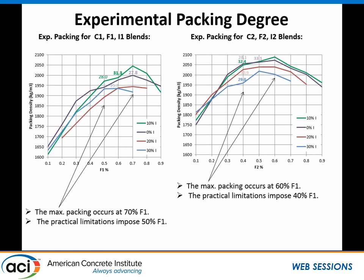Plotting packing density versus fine fraction, you get about 10% more packing between binary mixtures — the purple line with zero intermediate — to 10% intermediate, which is the green line. You see the same trend in both southern and northern aggregate, but slightly higher packing in southern aggregate, which may be because southern aggregate is crushed limestone. As Eric mentioned, crushed aggregate gives you higher packing, but that might not be beneficial for workability.